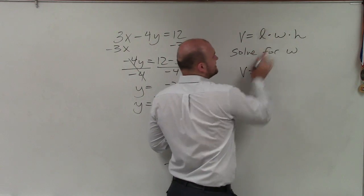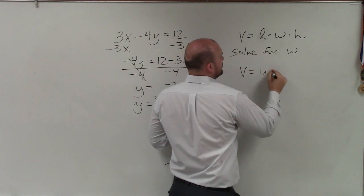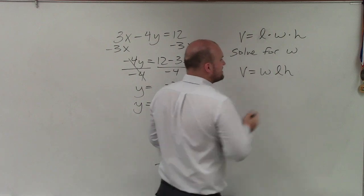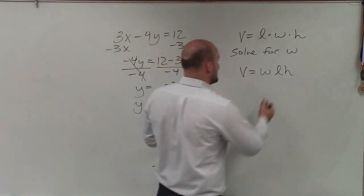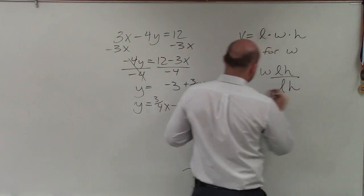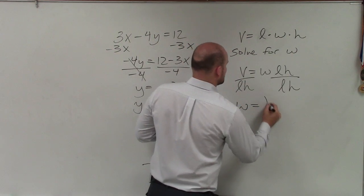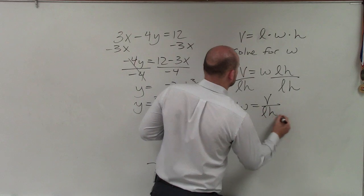And a lot of times, that might not be as obvious. So maybe we'll write it like this: w times l times h. So since it's being multiplied by both l and h, I have to divide by both l and h. Therefore, w equals volume divided by l times h.